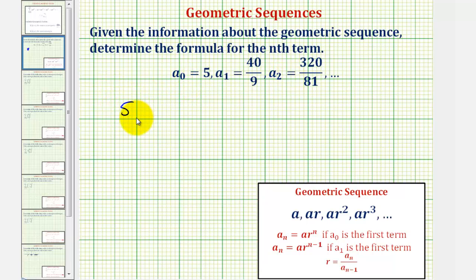When n is zero, a sub one equals 40 ninths, which means the second term in the sequence is 40 ninths when n equals one. The third term of the sequence is 320 divided by 81, when n equals two. And we assume the sequence continues.